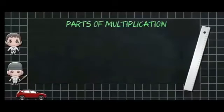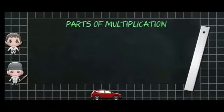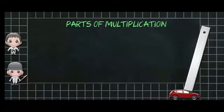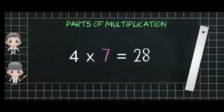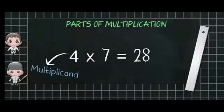Now we will see the terms used for multiplication by one example. Here 4 multiplied by 7 is equal to 28. Here the number that is to be multiplied is known as multiplicand.